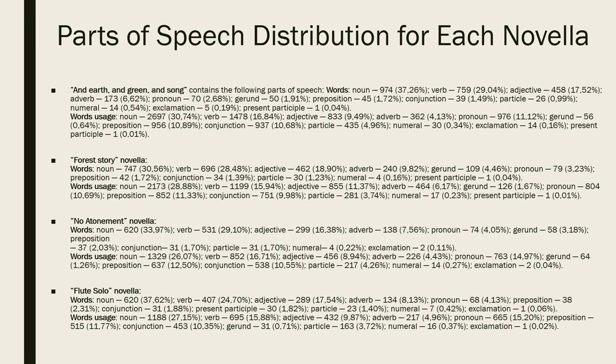Thut Solo novella. Words: Noun 620, 37.62%, Verb 407, 24.70%, Adjective 289, 17.54%, Adverb 134, 8.13%, Pronoun 68, 4.13%, Preposition 38, 2.31%, Conjunction 31, 1.88%, Present participle 30, 1.82%, Particle 23, 1.40%, Numeral 7, 0.42%, Exclamation 1, 0.06%.